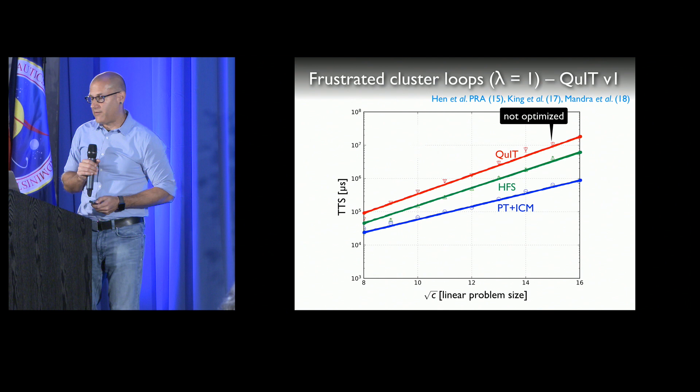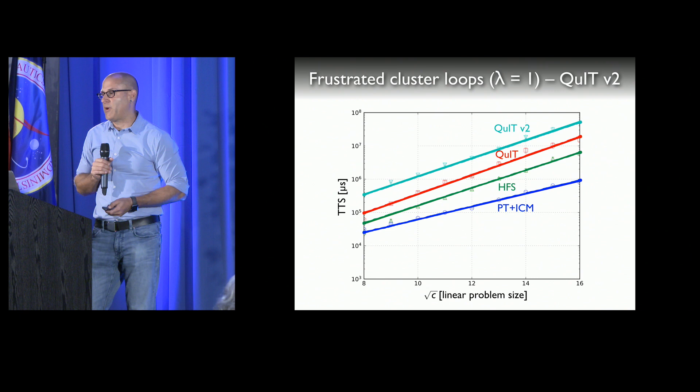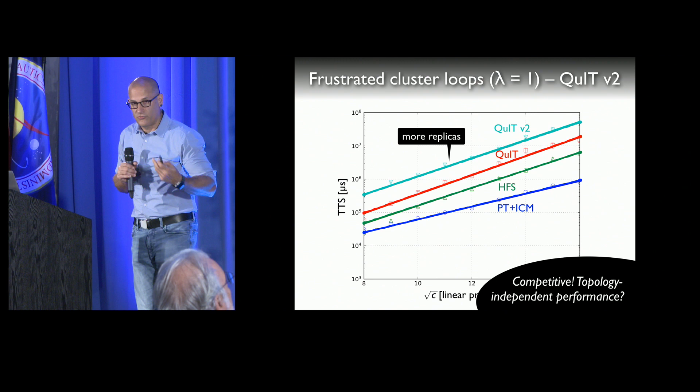In QuIT version two, we're still trying to figure out the optimal path in phase space, but we see a slightly better scaling — a slightly better slope. There is a vertical offset because we need more replicas to wander around the more complex path, but I would say this is competitive. The question now is whether this performance continues regardless of the topology of the problem.